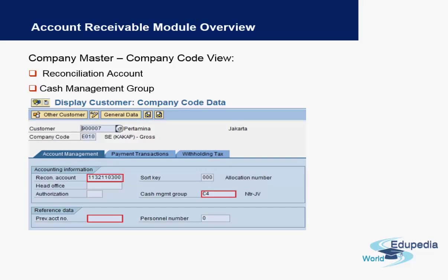The next tab is the company code view. As you can see, the company code comes up here — this is specific to this company code where you have the reconciliation account and the cash management group. You can also have any previous account number of the customer from a previous legacy system entered here.